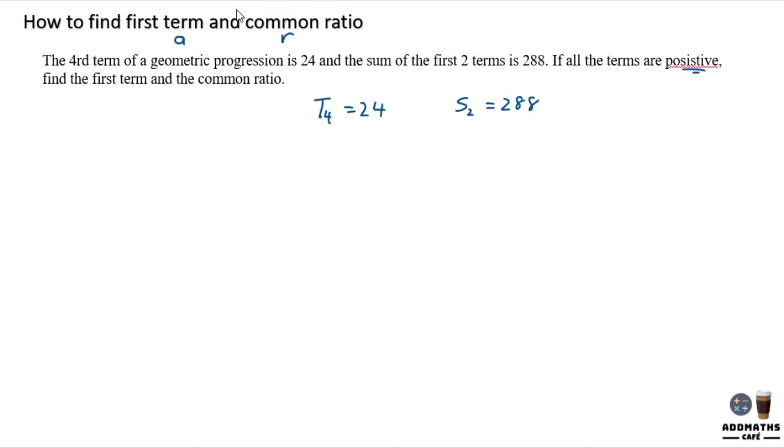So the fourth term, the formula will be AR^(4-1) equal to 24. And the sum of first two terms,